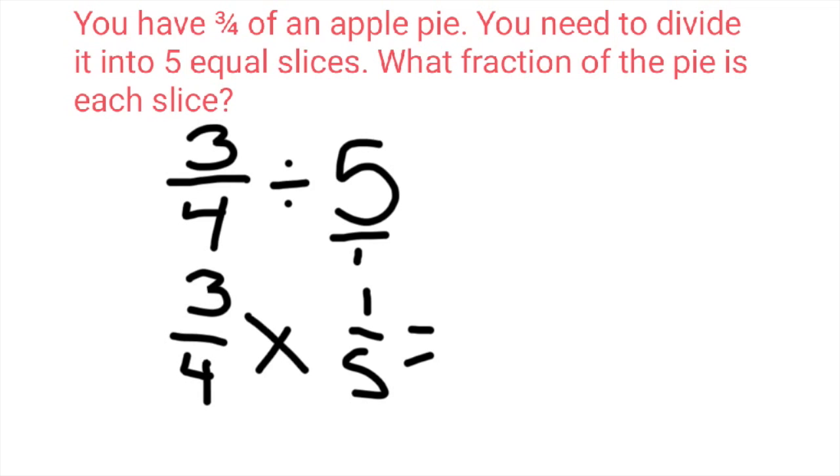Now it's just like multiplying fractions. 3 fourths times 1 fifth is 3 20ths. So each slice of the pie that we cut is going to be 3 20ths of the original apple pie.